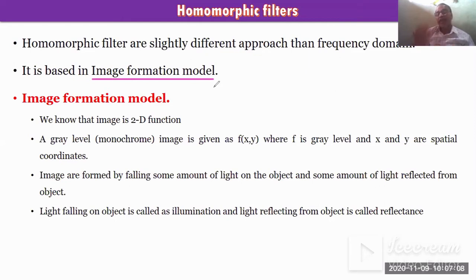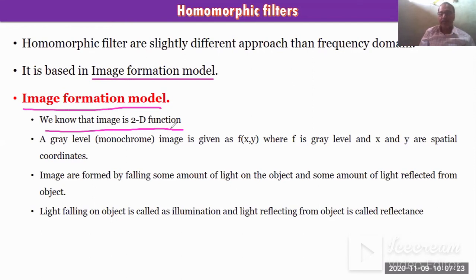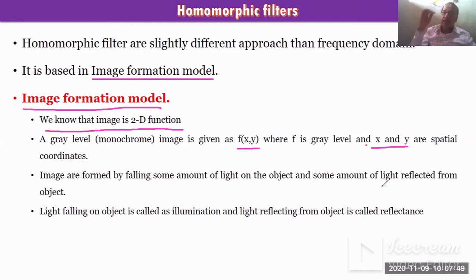The homomorphic filter works on the image formation model. We know that image formation: an image is a 2D function, and a gray level image is given as f(x,y) where f is the gray level and x,y are the spatial coordinates. Images are formed by falling some amount of light on the object. Suppose this is our object — light falls on the object and some rays are reflected back.